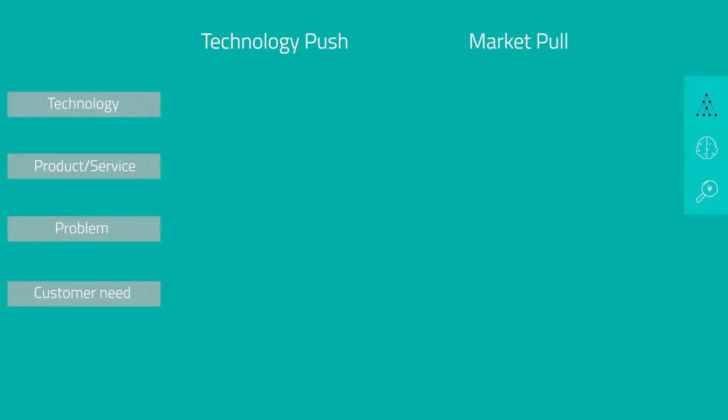In technology push, we start with an existing technology and try to find the customer need that is solved by this technology. The other way around, in market pull, we start with a customer problem or customer need, and we're on a quest to identify a specific technology to solve that need.